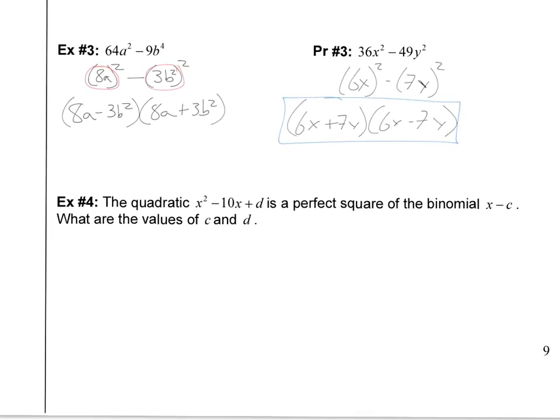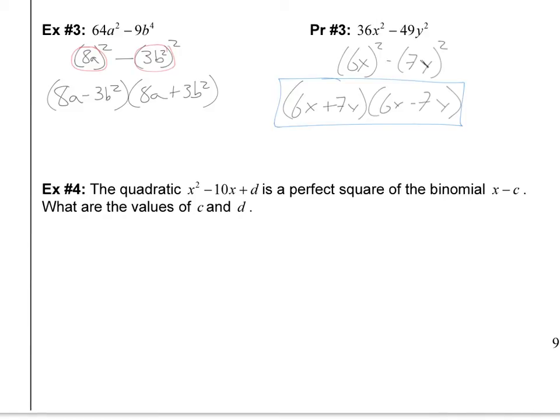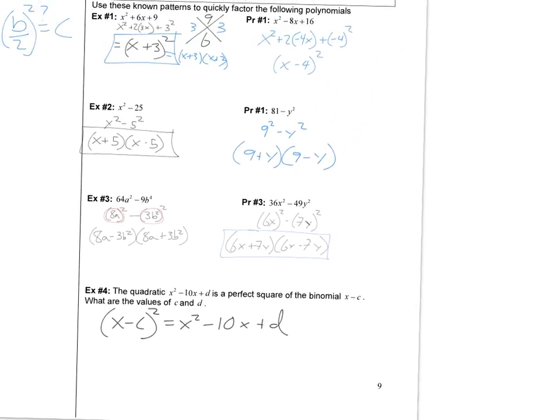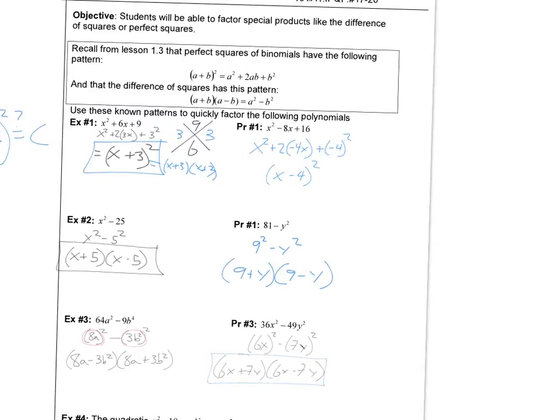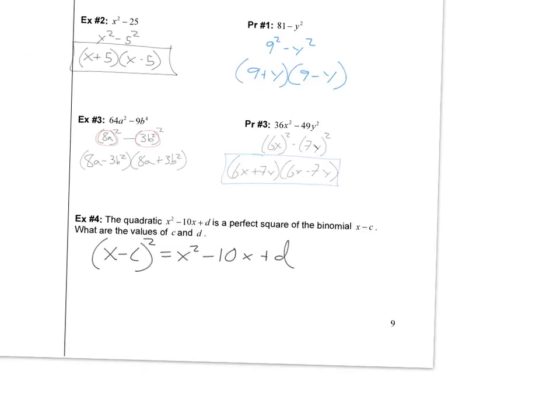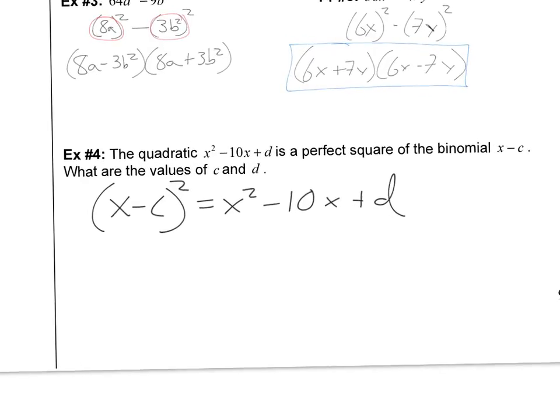For this last one, I want to work through the logic here with you. It says the quadratic x²-10x+d is a perfect square of the binomial (x-c). What are the values of c and d? Well, let's just start off by writing a little equation. If it's a perfect square of (x-c), that means that (x-c)² has to equal x²-10x+d. Well, we learned a couple things about the pattern up here. Remember, if I have (a+b)², we just take the first thing and square it, the last thing and square it, and in the middle we have 2 times the two things multiplied together.